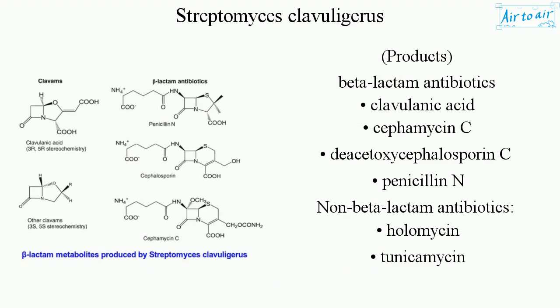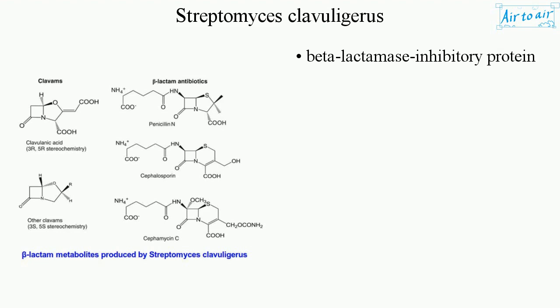Products include beta-lactam antibiotics such as clavulanic acid, cephomycin C, and D-stoxycephalosporin C, as well as penicillin N. Non-beta-lactam antibiotics include holomycin and tunicomycin. It also produces beta-lactamase inhibitory protein.